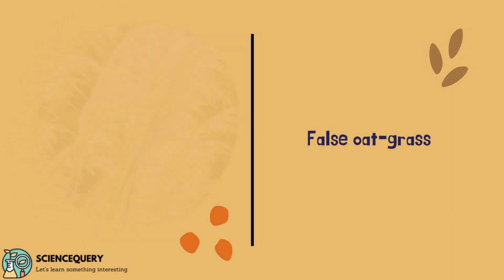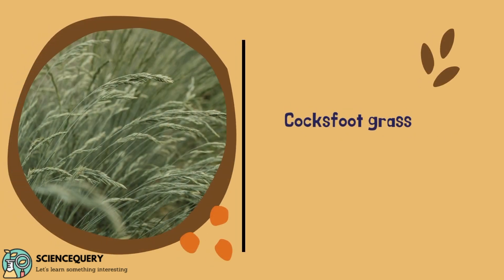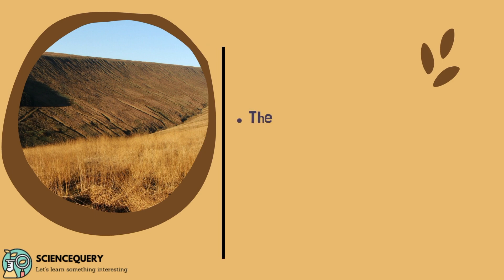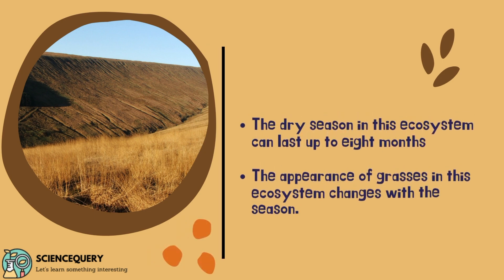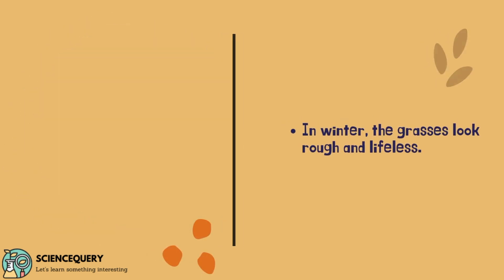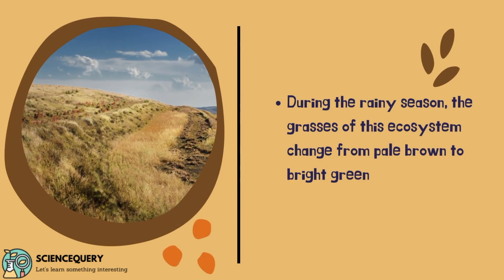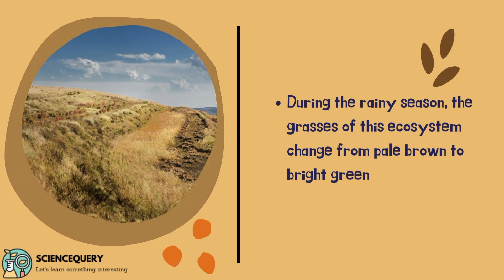Some examples of the grasses in the grassland ecosystem are false oat grass, rough meadow grass, cocksfoot grass, and so on. The dry season in this ecosystem can last up to 8 months. The appearance of grasses in this ecosystem changes with the season — during the winter the grasses look rough and lifeless, whereas during the rainy season the grasses change from pale brown to bright green.